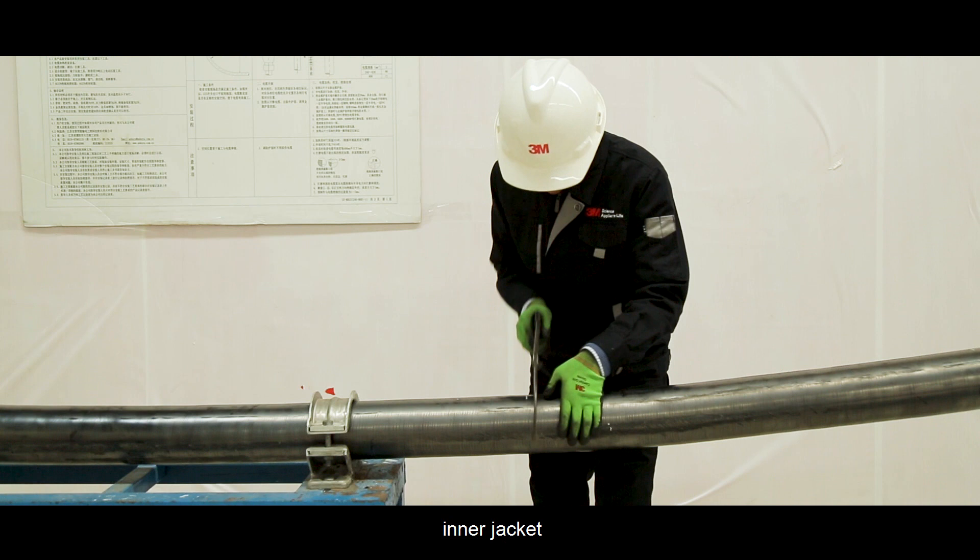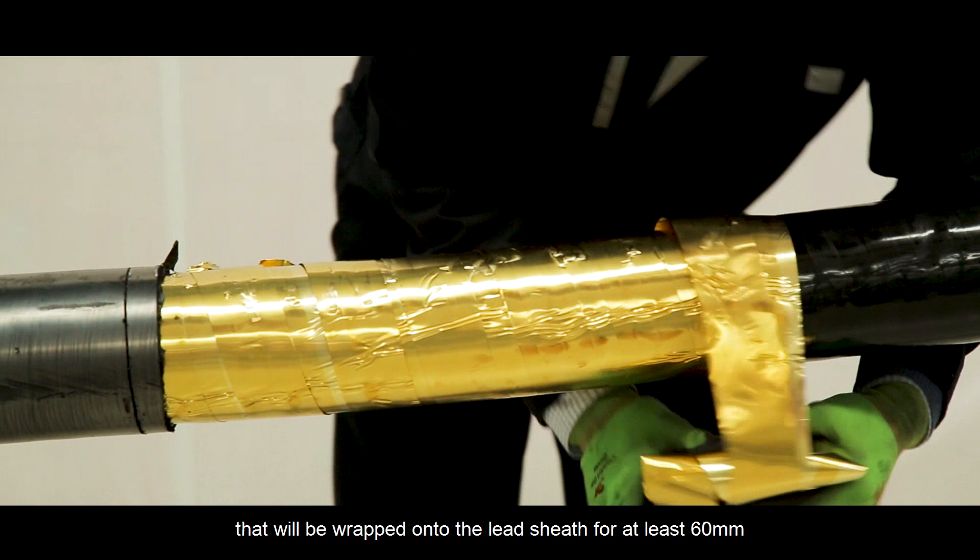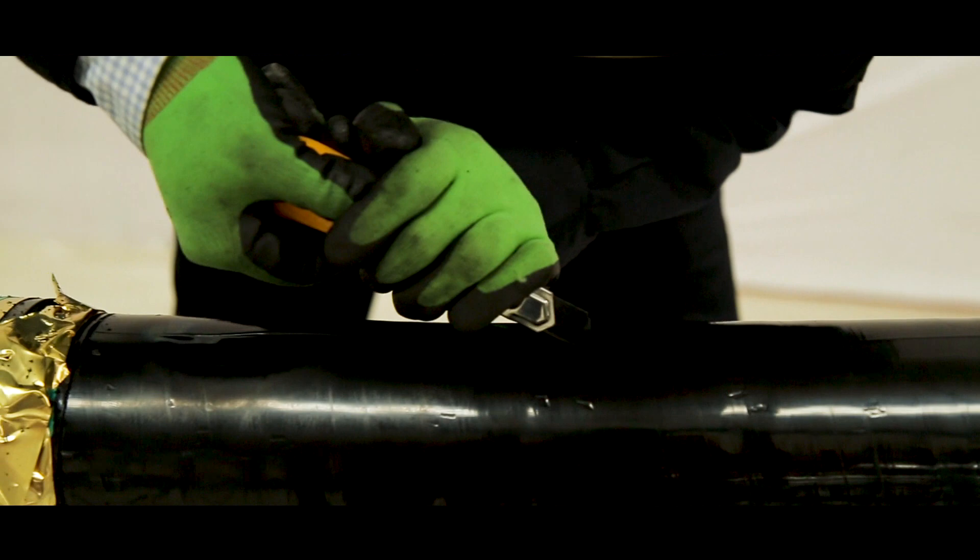Measure and remove the cable jacket, brass tape, inner jacket, and lead sheath according to installation drawing. Allow additional length of cable for adjustment. Keep sufficient length of brass tape that will be wrapped onto the lead sheath for at least 60mm.